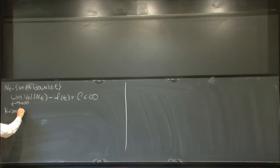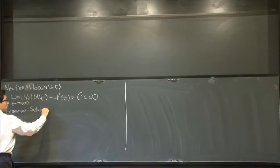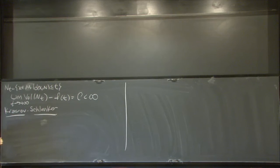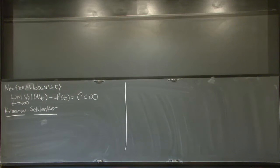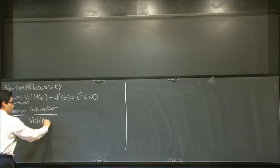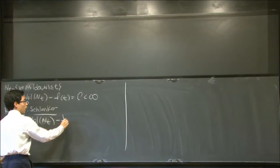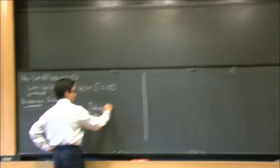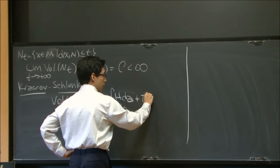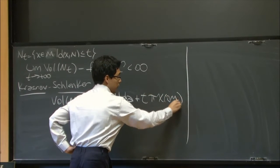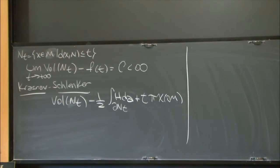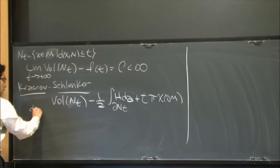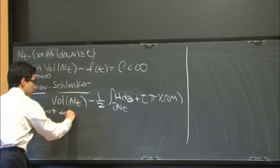So let me tell you right away how to do it for this particular case. I start with the volume, I'm going to subtract one half of the integral of the mean curvature in the boundary of Nt, and then I'm going to add this correction term where this is the characteristic of your boundary.